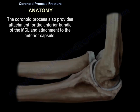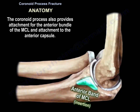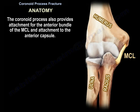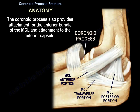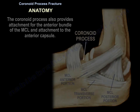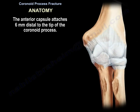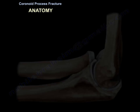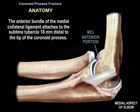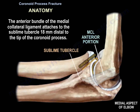The coronoid process also provides attachment for the anterior bundle of the MCL and attachment to the anterior capsule. The anterior capsule attaches 6 mm distal to the tip of the coronoid. The anterior bundle of the medial collateral ligament attaches to the sublime tubercle, 18 mm distal to the tip of the coronoid.